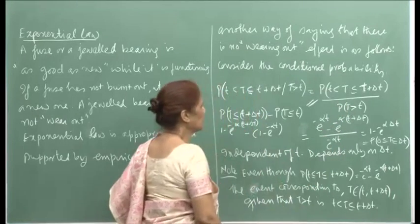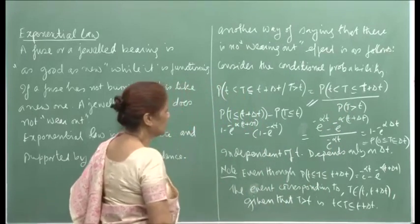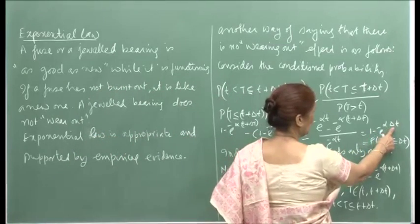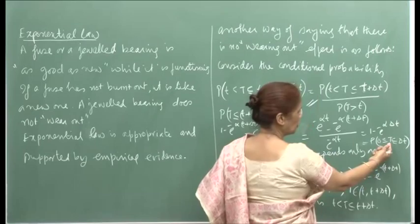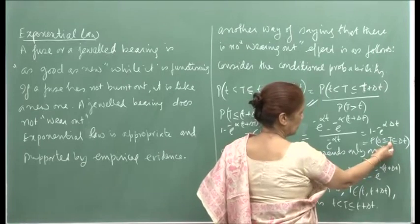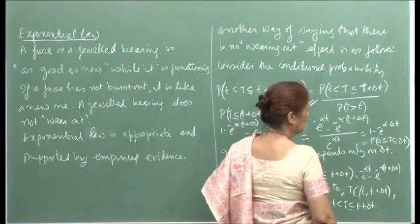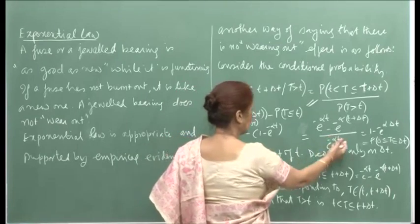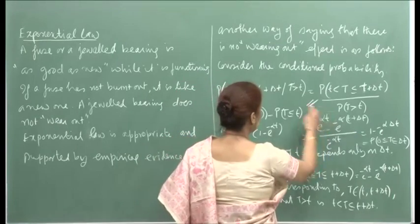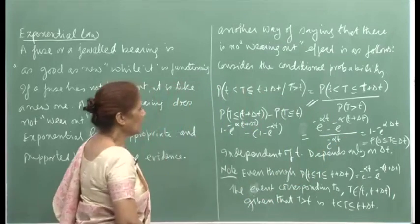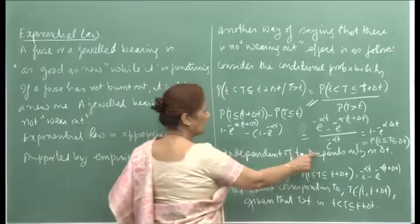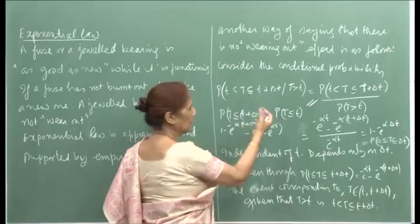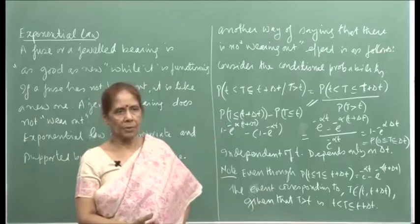I am showing this for the exponential law. Therefore, this simplifies to 1 minus e^(−α delta T), which is nothing but the probability that T lies between 0 and delta T. This tells you that this conditional probability is independent of t — it depends only on delta T, that is, only on the length of the interval being considered.